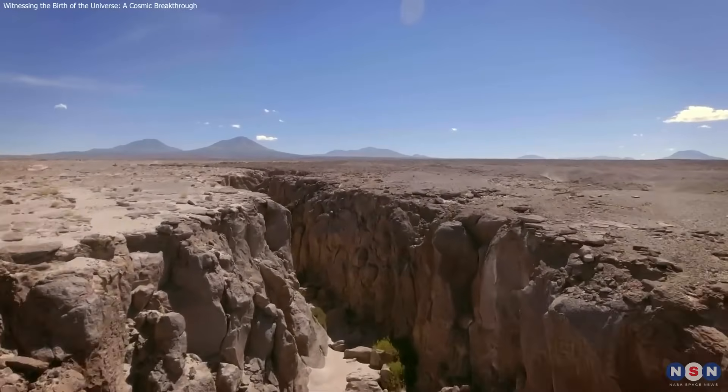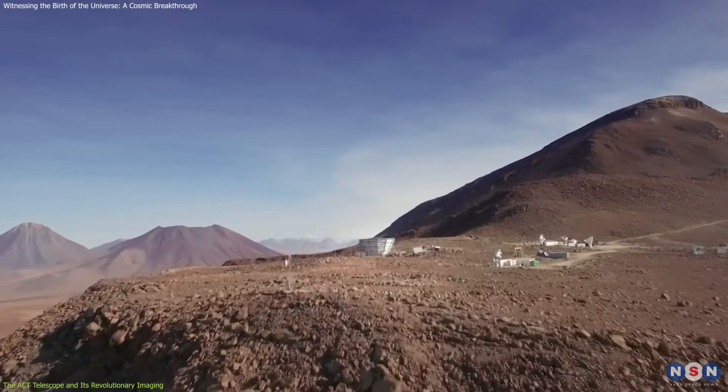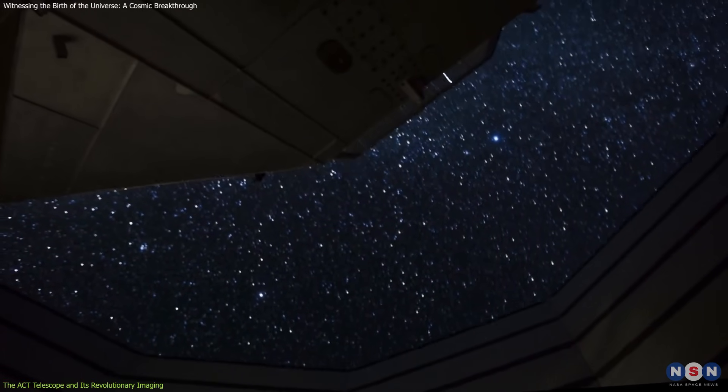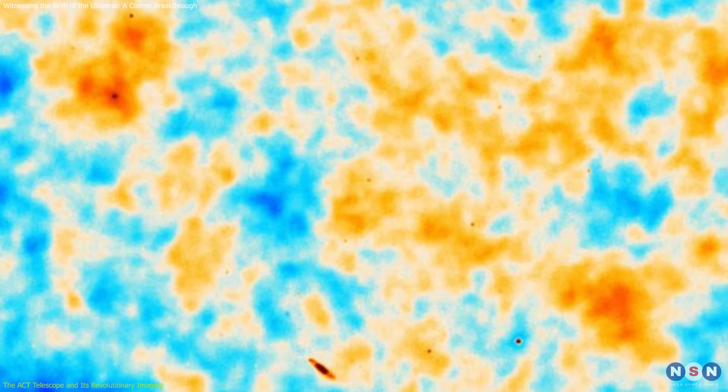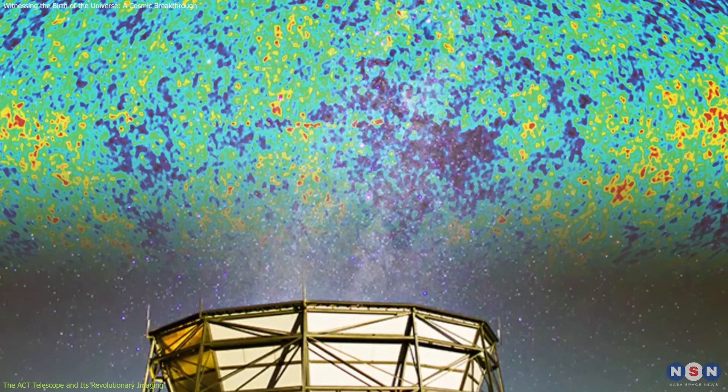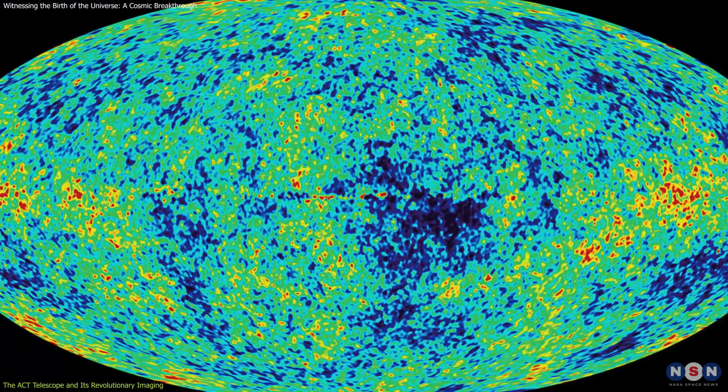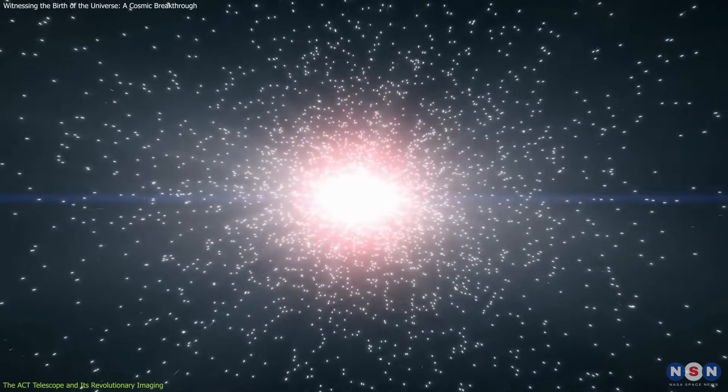The Atacama Cosmology Telescope sits high in the Chilean Andes at an elevation of 5,190 meters, about 17,000 feet. Its location provides an optimal environment for observing the cosmos due to minimal atmospheric interference, particularly in detecting microwave radiation. The ACT specializes in studying the Cosmic Microwave Background, CMB, the faint glow left over from the Big Bang, offering new insights into the universe's earliest moments.